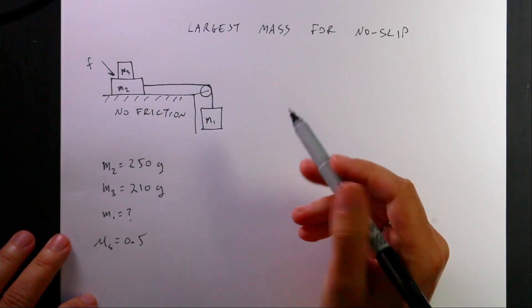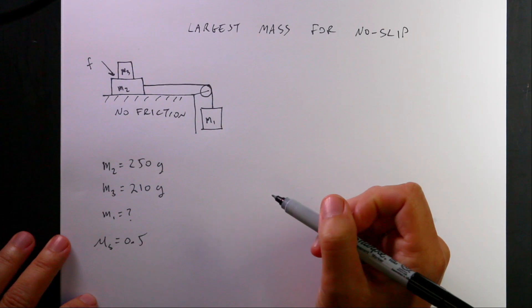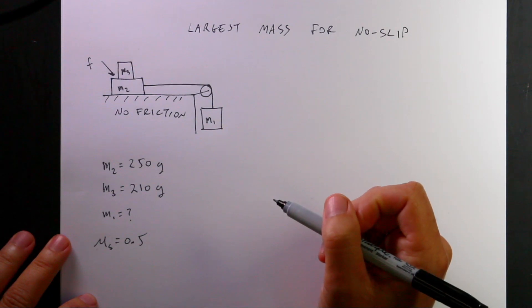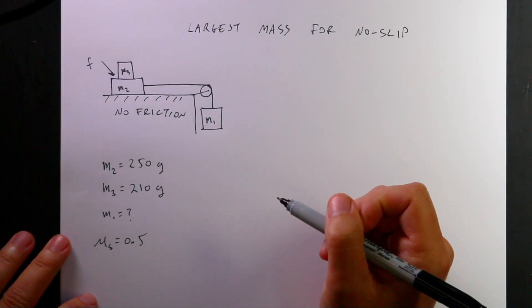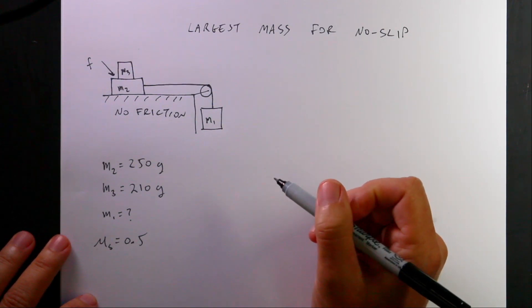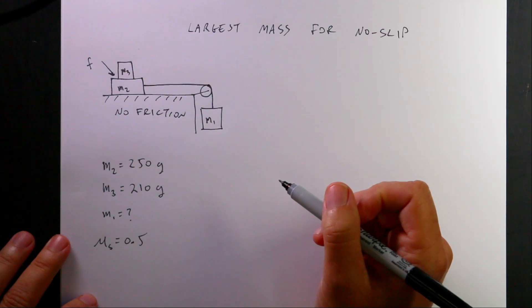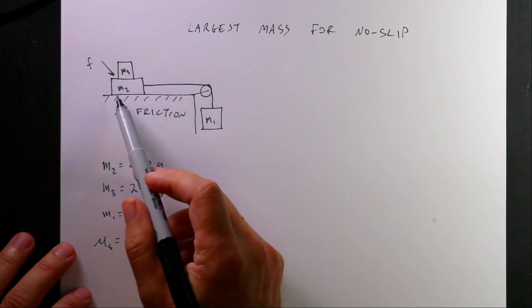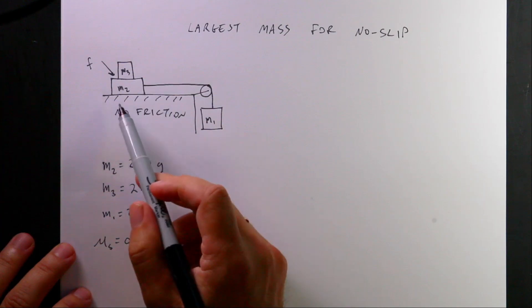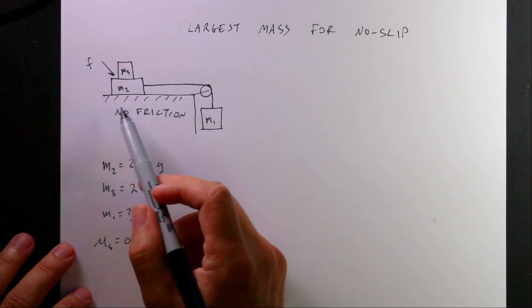I saw this problem on Reddit and I kind of liked it, so I figured I'm going to solve it. I did change the numbers up just so I could say it's my own problem. But let me describe the problem. So I have a no-friction table.